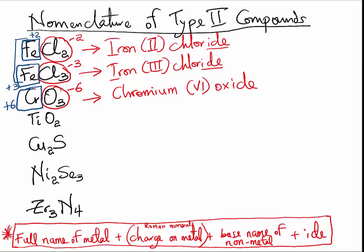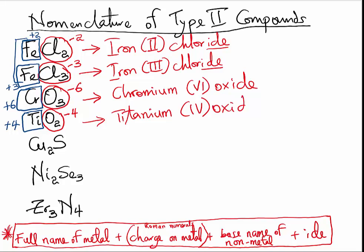TiO₂ — again, you begin from the non-metal. Oxygen will have a charge of minus 2, but we have 2 oxygen atoms in TiO₂, so the total negative will be negative 4, which means the total positive must be positive 4. That means the name of TiO₂ would be Titanium(IV) oxide.